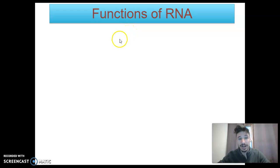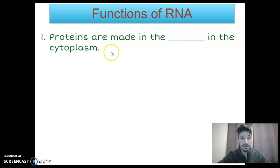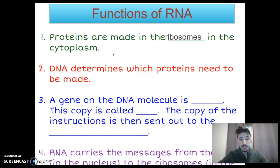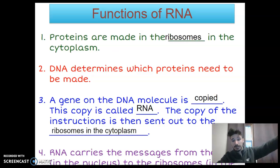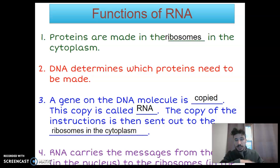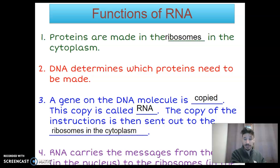What does RNA do, and how is it really the bridge between DNA and making a protein? Proteins are made on the ribosomes in the cytoplasm. The DNA determines which proteins need to be made, and a gene on the DNA molecule is copied — this copy is then called RNA. The copy of the instructions is sent out of the nucleus to the ribosome in the cytoplasm. RNA is like a messenger; it carries the message from the gene in the nucleus all the way to the ribosome where the protein will be made.